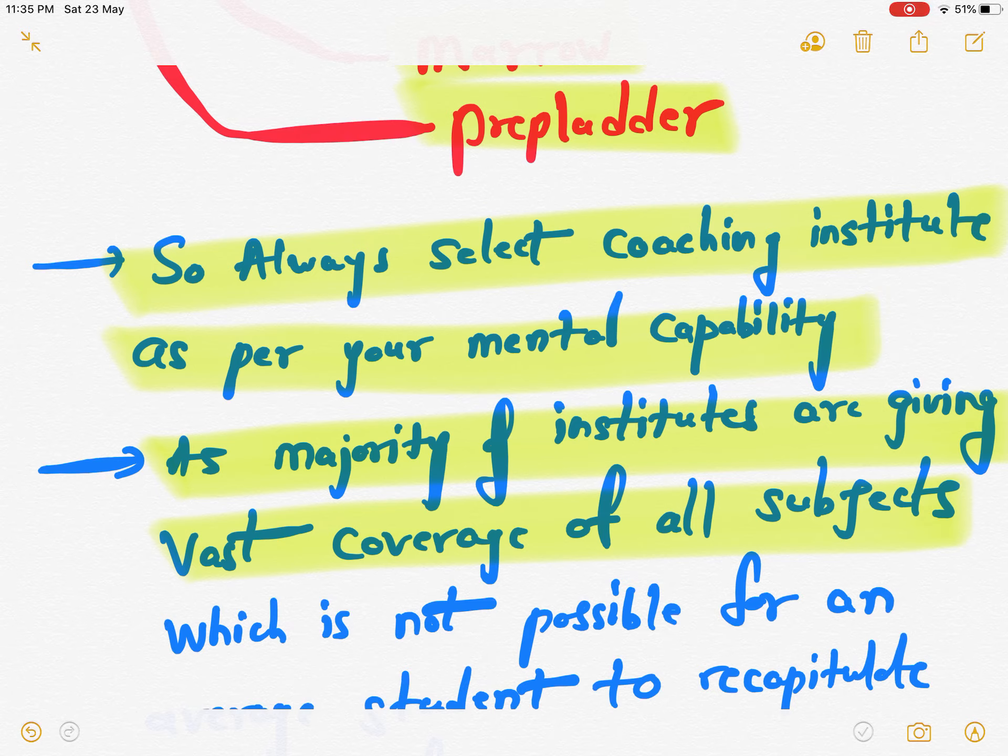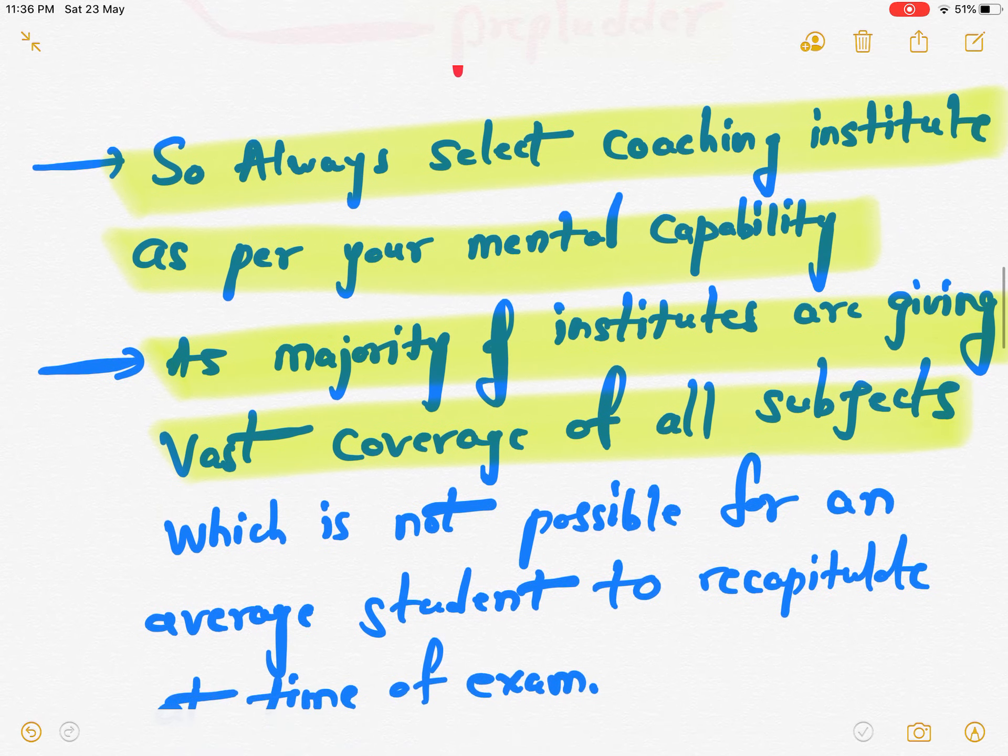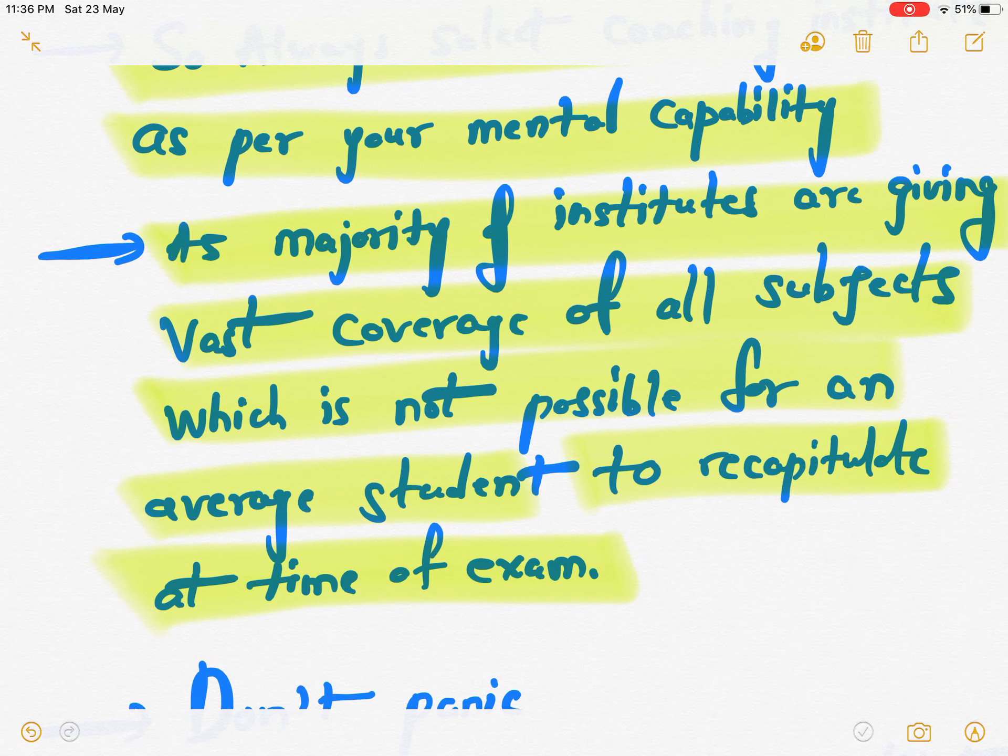But I'm very sorry to say that any of the institutes is not selective students-wise. As majority of the student institutes are giving vast coverage of all the subjects, which is not possible for an average student to recapitulate at the time of exam, because majority of the students even don't know how to revise the things and how many times the revision is necessary. So it is very difficult for the average student to recapitulate all the vast things at the time of exam.